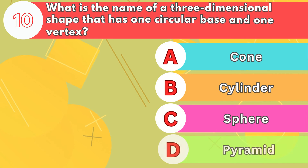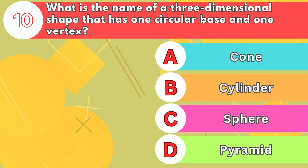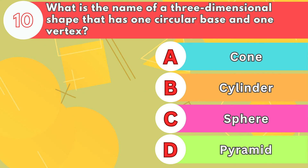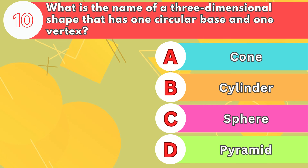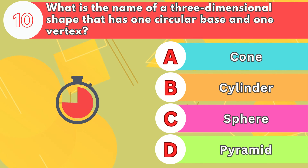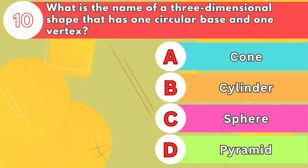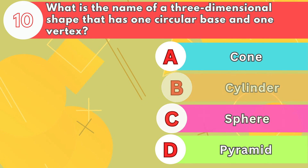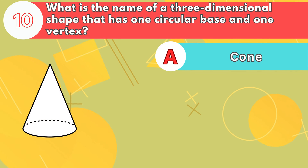Number 10. What is the name of a three-dimensional shape that has one circular base and one vertex? The answer is letter A, cone.